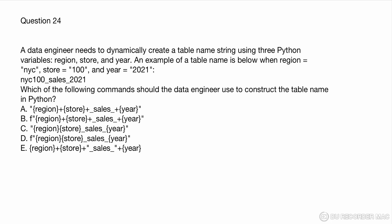Question 24: A data engineer needs to dynamically create a table name string using three Python variables: region, store, and year. An example table name is nyc_100_sales_2021. The three variables need to be concatenated. Looking at the options, option D uses an f-string to format the variables correctly — region, store with no spaces, underscore sales underscore year — replacing all three values. Option D is the right answer.